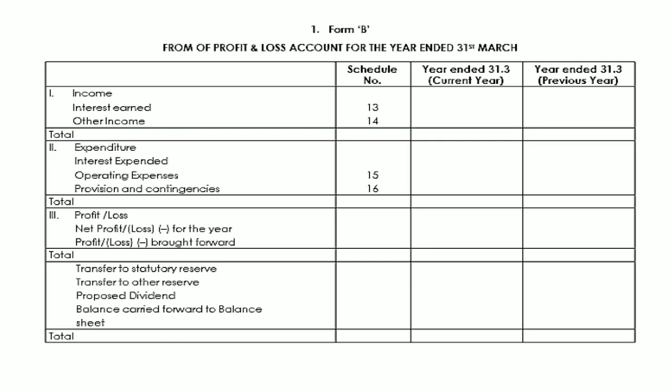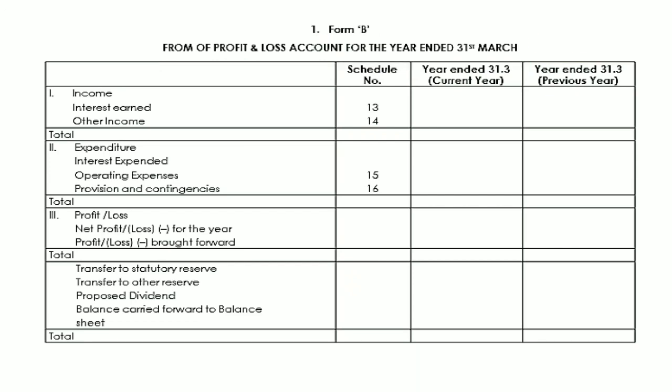In the Banking Regulation Act 1949, in Schedule 3, Form B is prepared for a banking company's profit and loss account. Schedule 3, Form B is the form of profit and loss account, and Form A is prepared for the balance sheet. The profit and loss account is prepared for the year ending 31st March.